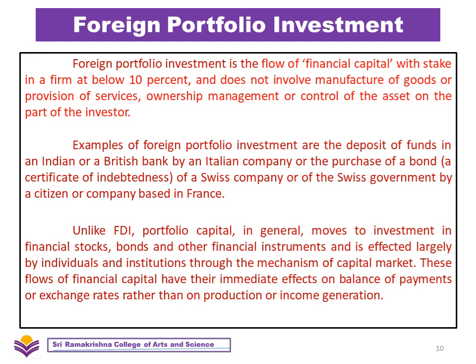Moving on to foreign portfolio investment: FPI is the flow of financial capital with a stake in a firm at below 10% and does not involve manufacture of goods or provision of services, ownership, management, or control of the asset on the part of the investor. Examples include the deposit of funds in an Indian or British bank by an Italian company, or the purchase of a bond of a Swiss company by a citizen based in France. Unlike FDI, portfolio capital generally moves to investment in financial stocks, bonds, and other financial instruments through the mechanism of capital markets. These flows of financial capital have their immediate effects on the balance of payments or exchange rates rather than on production and income generation. When the investment stake is less than 10%, it is classified as foreign portfolio investment.